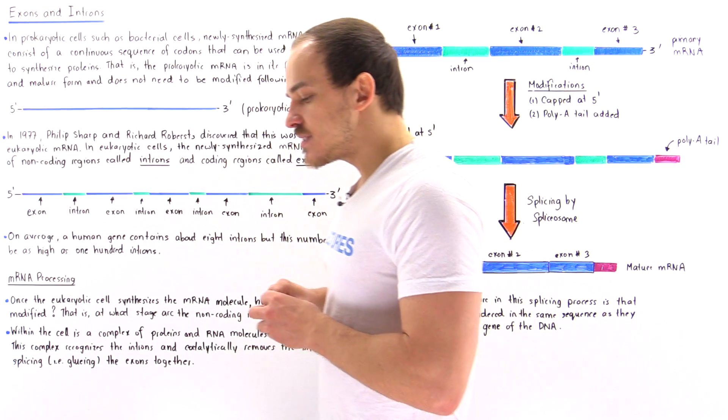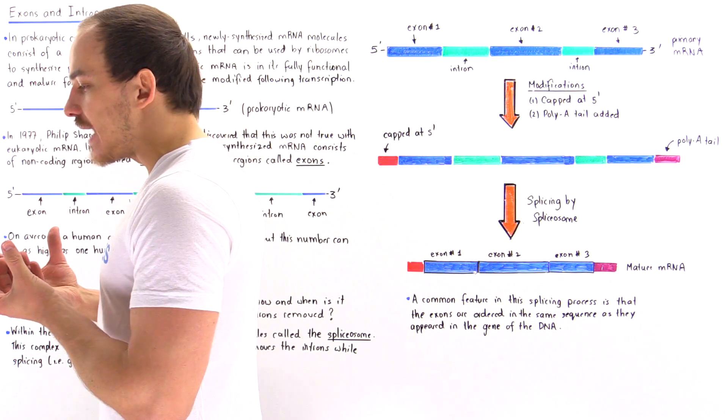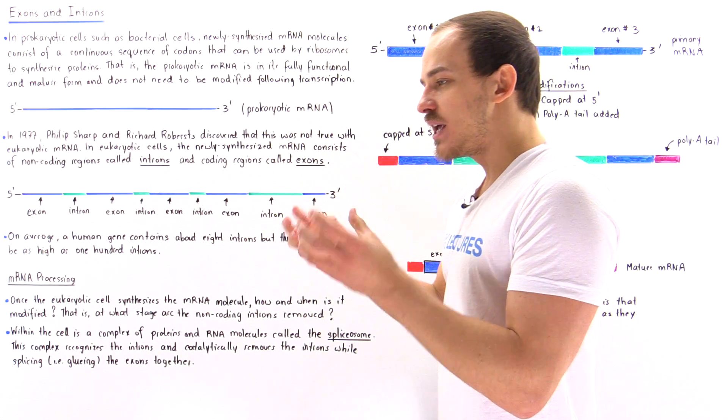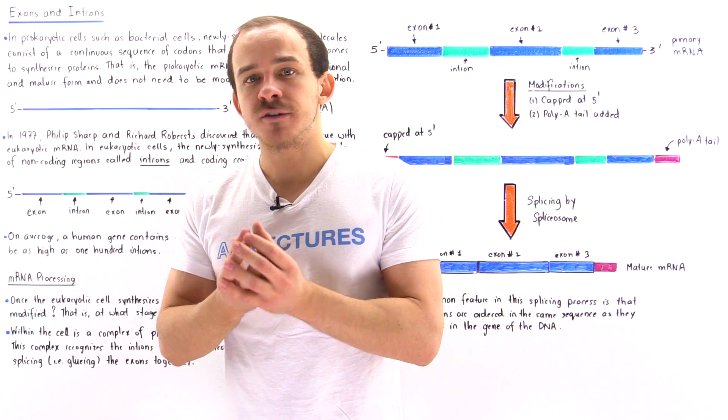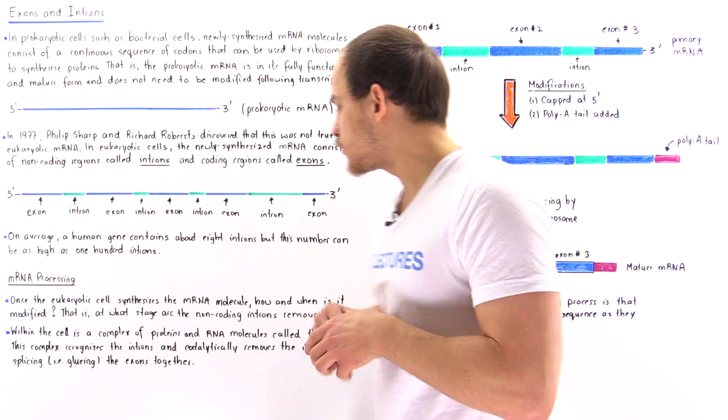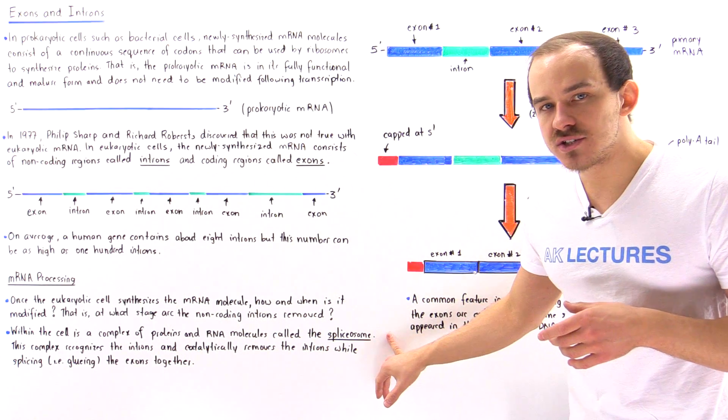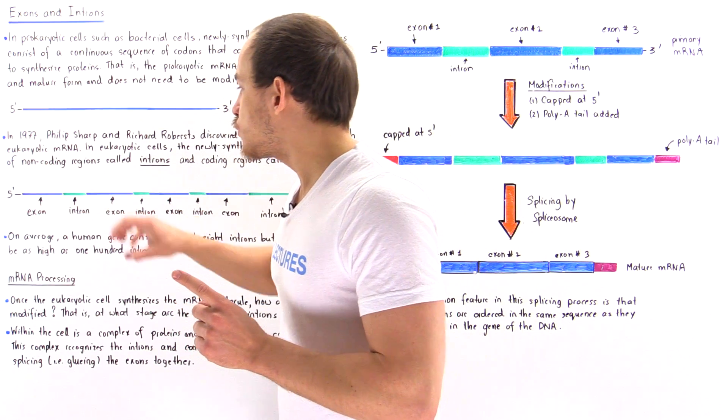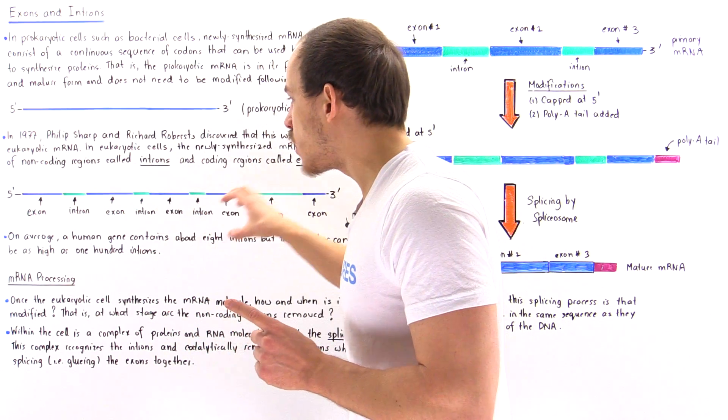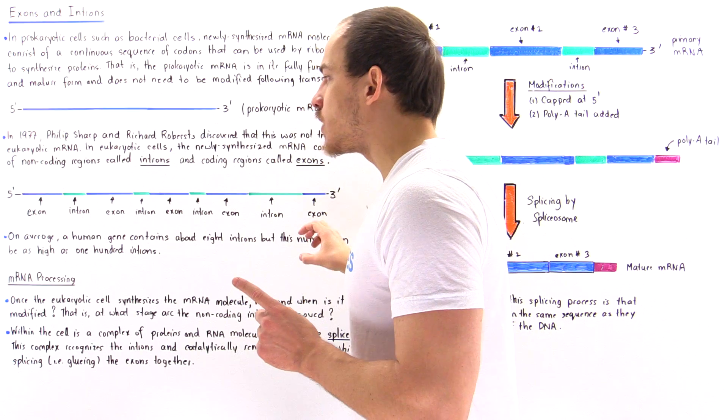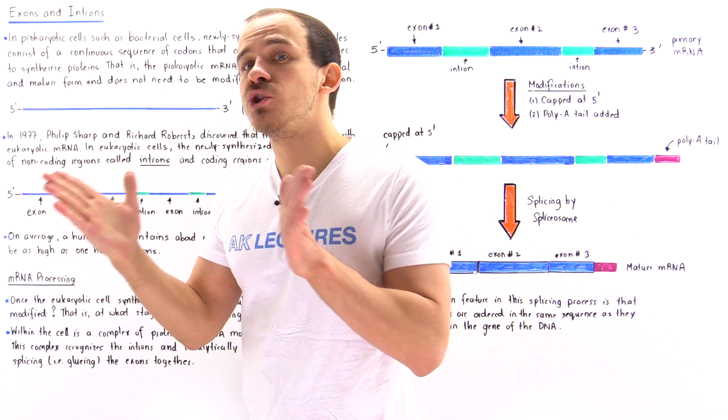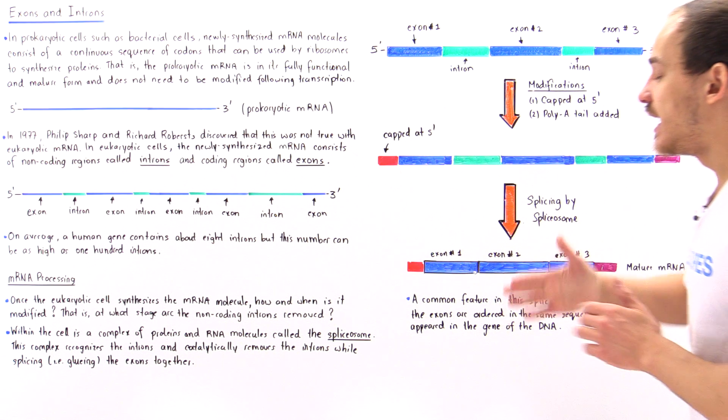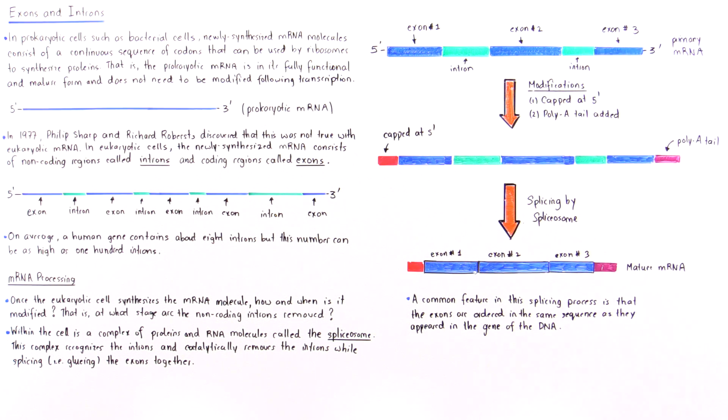Well, basically, within our cell, we have this complex of special proteins and special RNA molecules that aggregate and combine together to form a complex, a structure known as a spliceosome. And the spliceosome is responsible for essentially locating these introns, removing the introns, while at the same time, gluing together, splicing together those exons. And this can be seen in the following diagram.